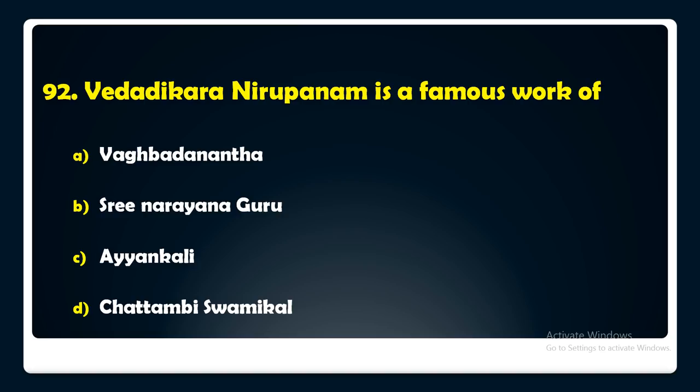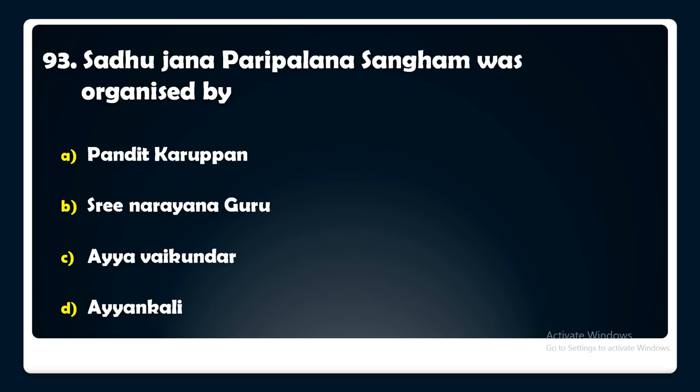Saadujana Paripalana Sangham was organized by — Pandit Karuppan, Sree Narayana Guru, Ayyankali, or Ayya Vaikundar? The answer is: Saadujana Paripalana Sangham was organized by Ayyankali.